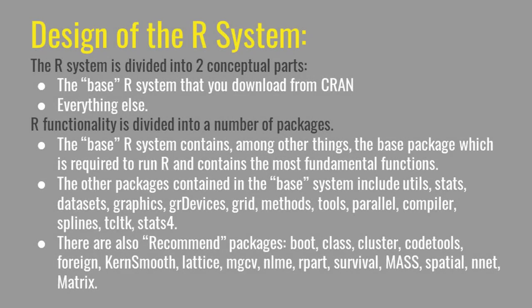The basic R system is divided into two conceptual parts. There is a base R system that you download from CRAN — the Comprehensive R Archive Network — which is the go-to place for all things in R. The base system contains the base package with all the low-level fundamental functions needed to run R, plus other packages such as utils, stats, datasets, and graphics. There are also recommended packages including boot for bootstrap, class for classification, cluster, code tools, foreign, and others. These packages come with the base R system you download from CRAN.